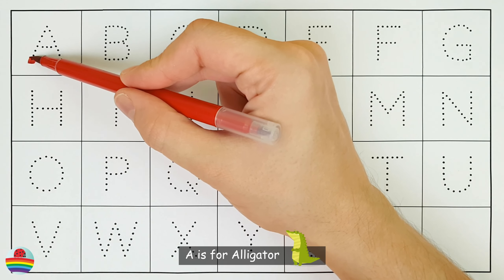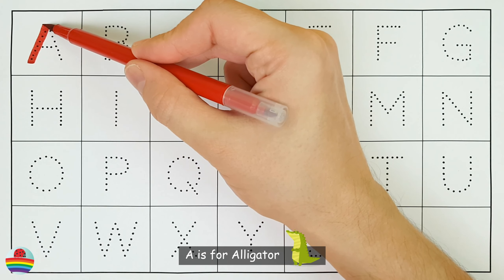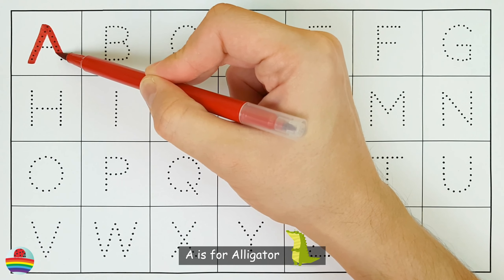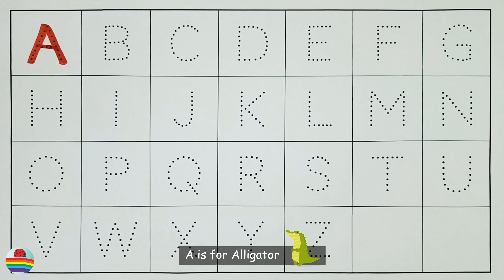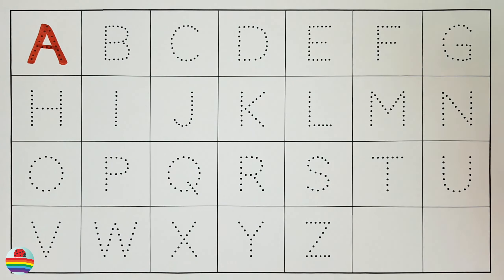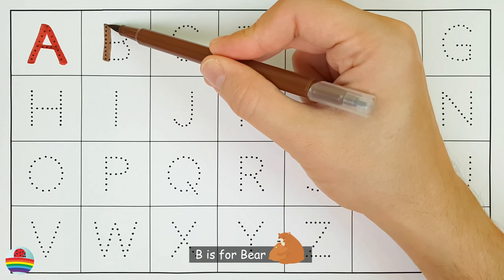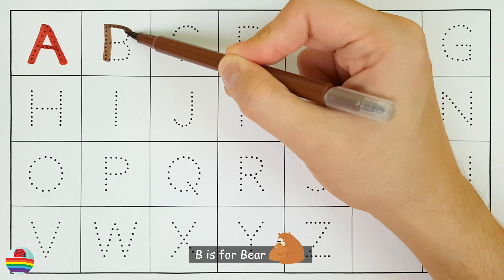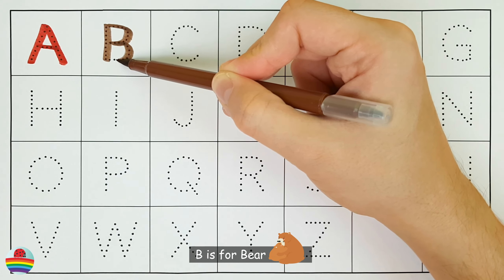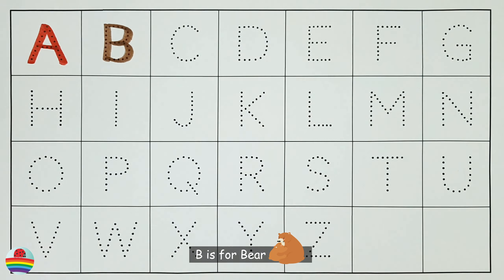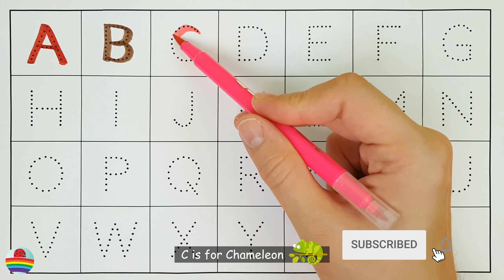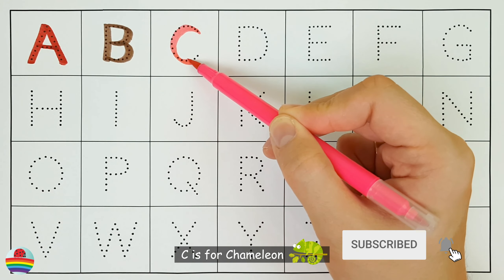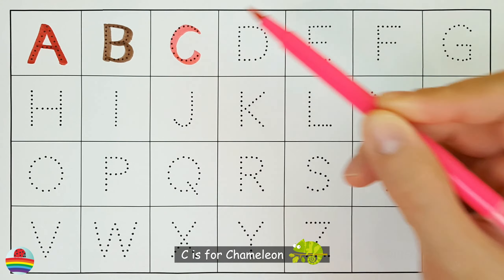A. A is for alligator. A. B. B is for bear. B. C. C is for chameleon. C.